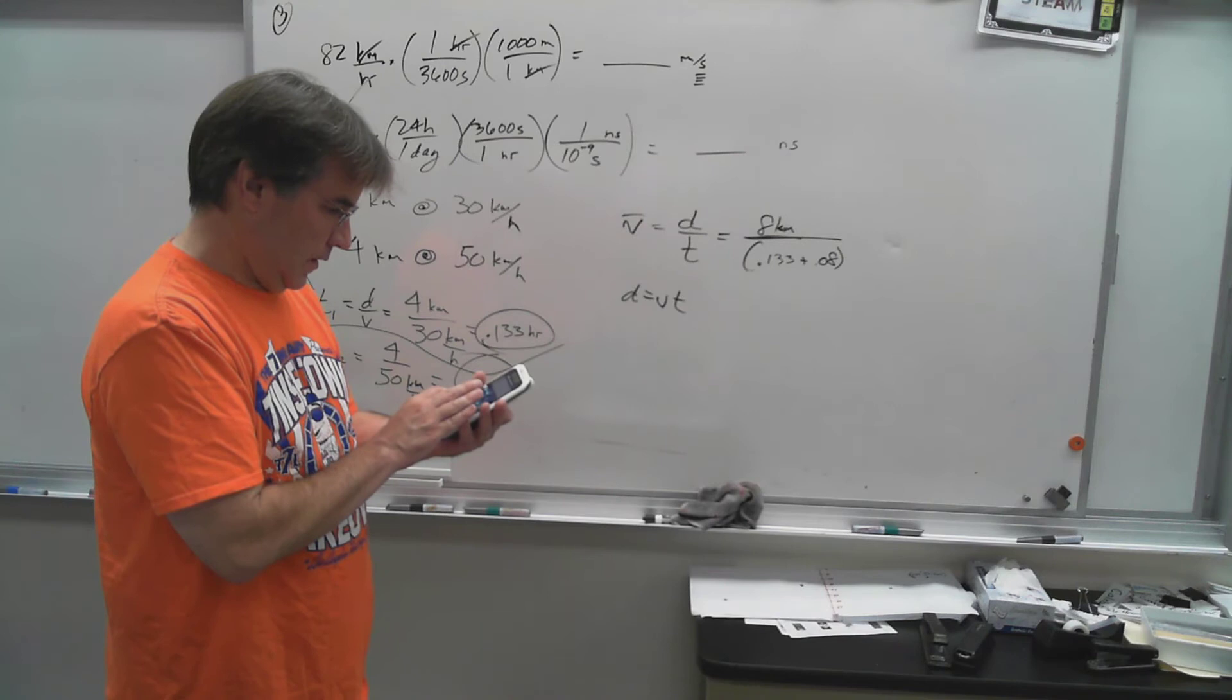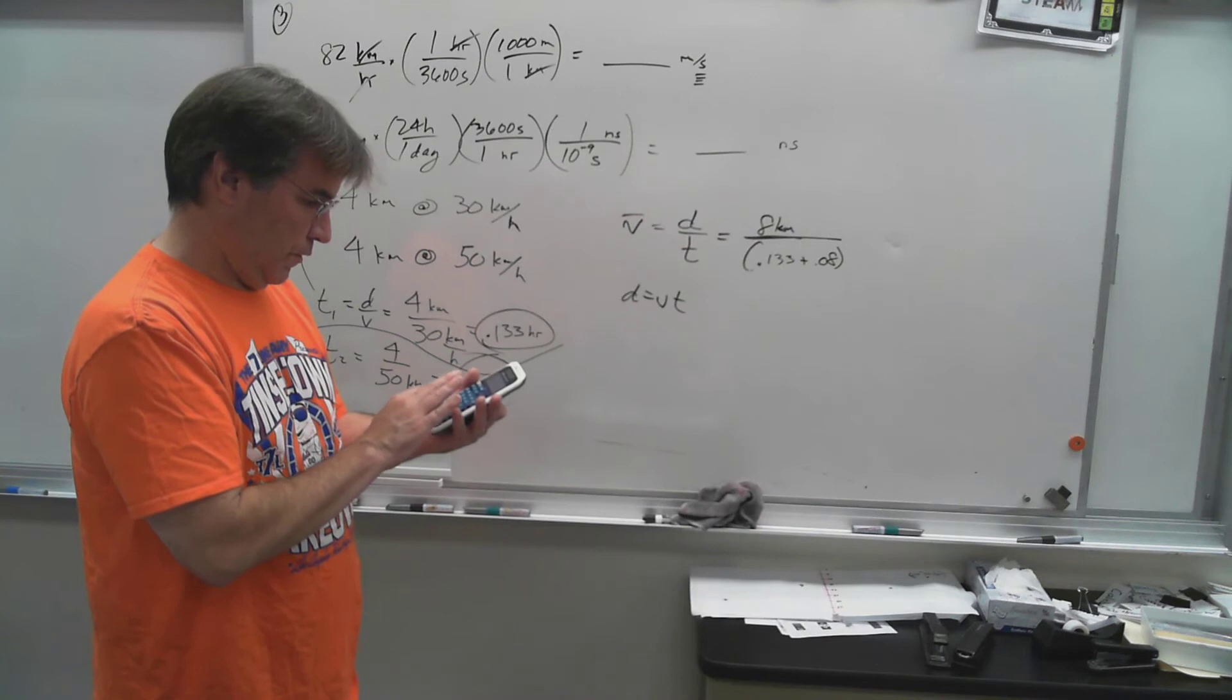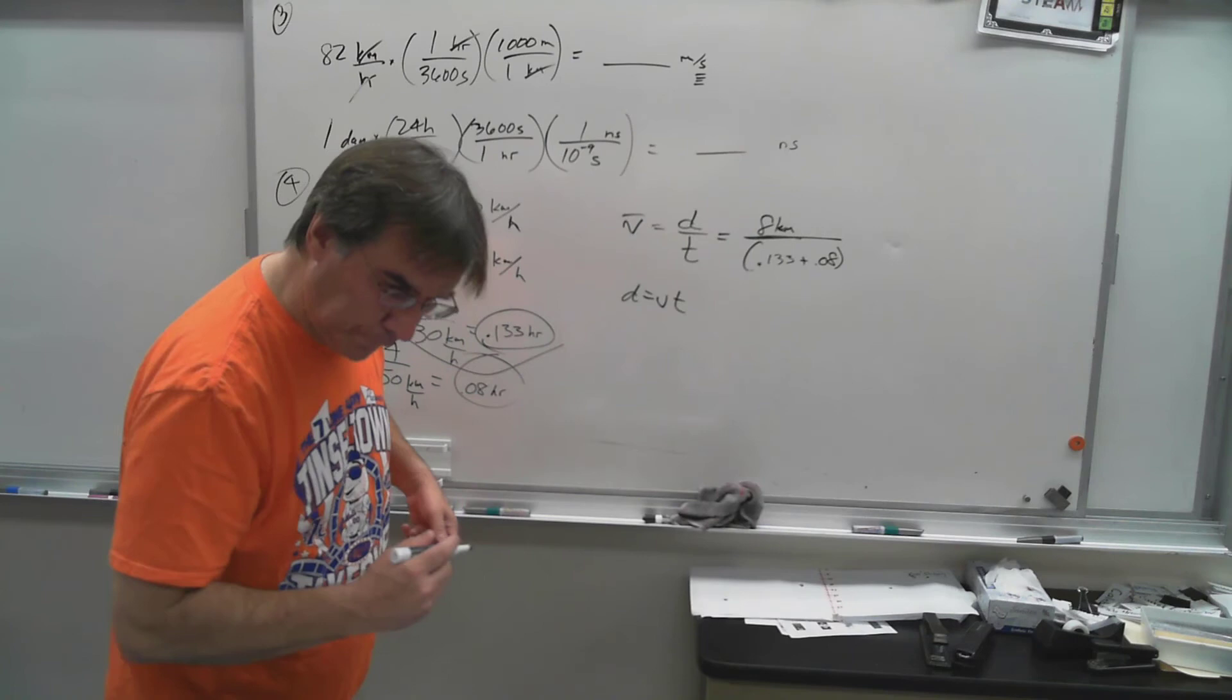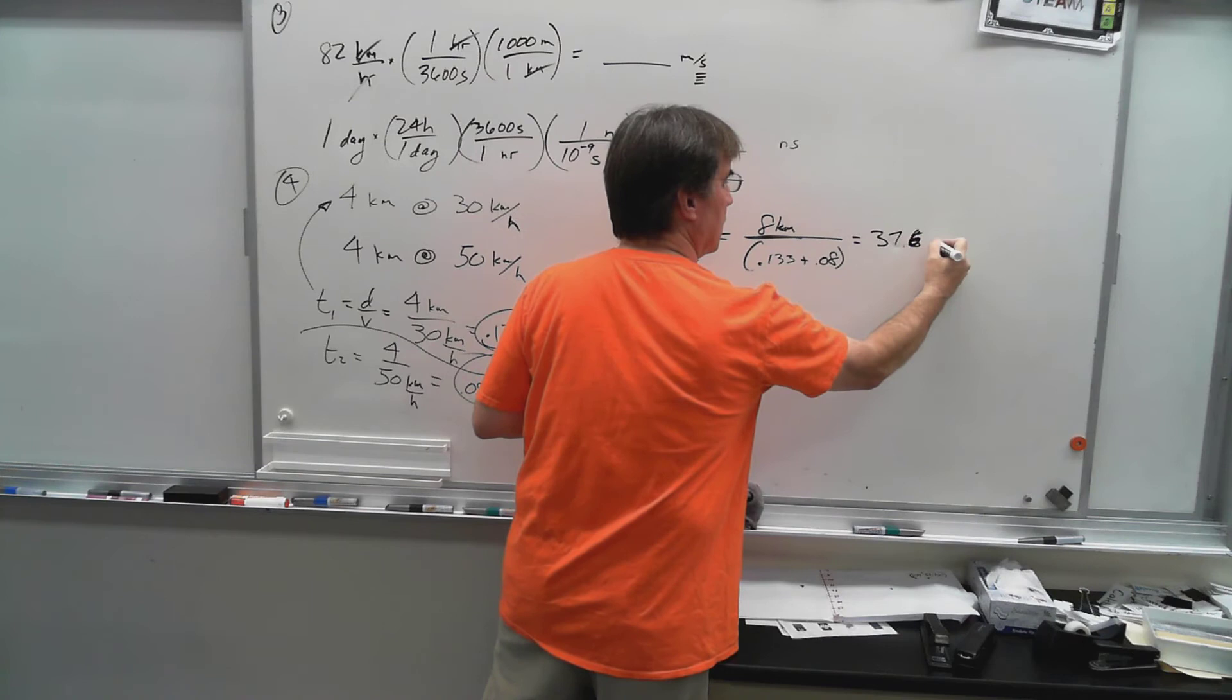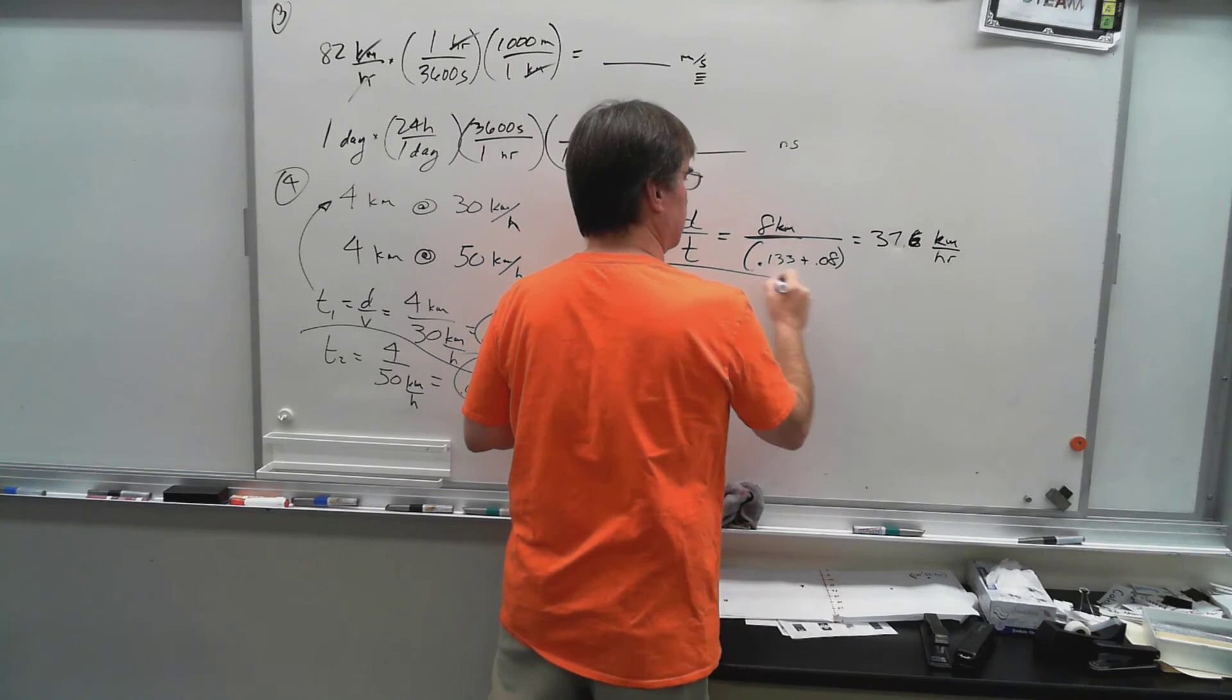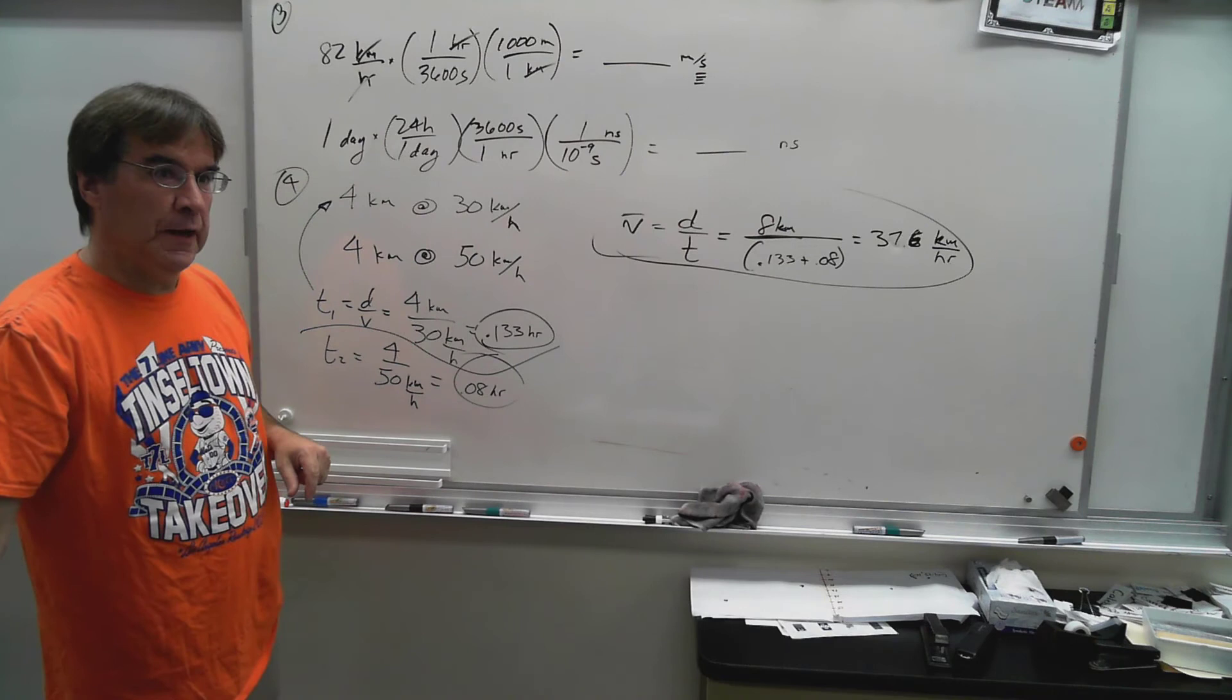So you get eight kilometers divided by that sum. 0.133 plus 0.08. You're going to get 37.5-ish, maybe 37.6 kilometers per hour. And your intuition is still telling you, why isn't it 40? Because you spend a lot more time driving at the slower speed. That dragged your average down.